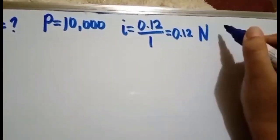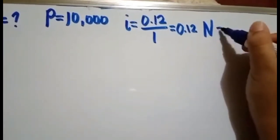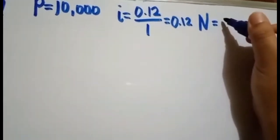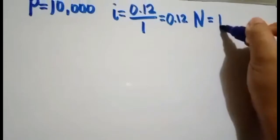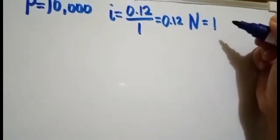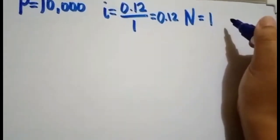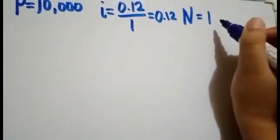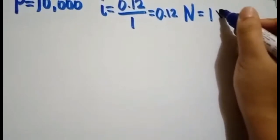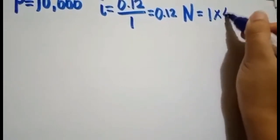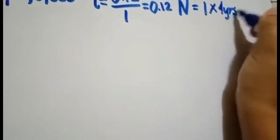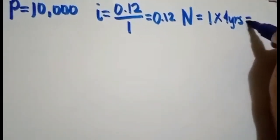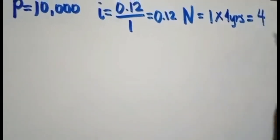The number of payments over the years - you have your number of payments per year, which is annually, or which is 1, because you are going to pay once for 1 year. You are going to multiply it by 4 years, which is the number of years involved. Thus, the value of your n is 4.